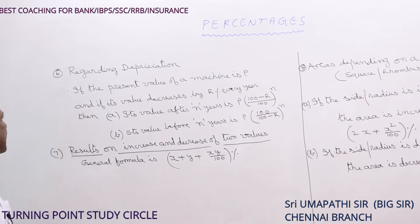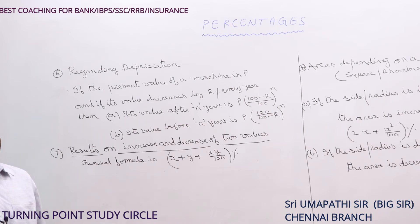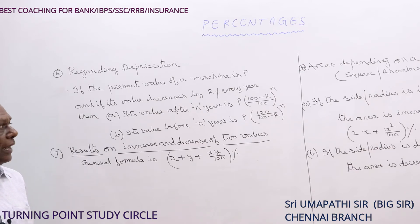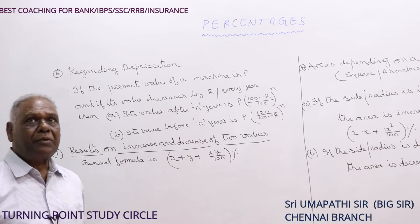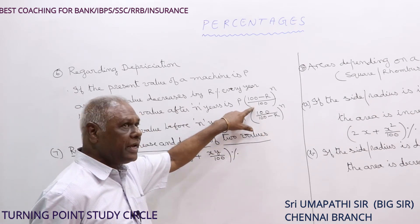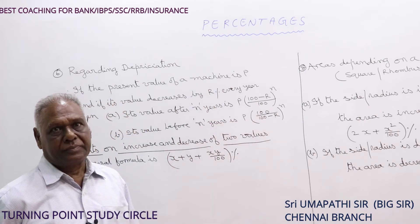Regarding depreciation: if the present value is P and its value decreases by R% every year, then its value after n years is given by P × (100 − R)/100 whole to the power of n. Its value before n years is given by P × 100/(100 − R) whole to the power of n. So the fraction for after n years is reversed for before n years.